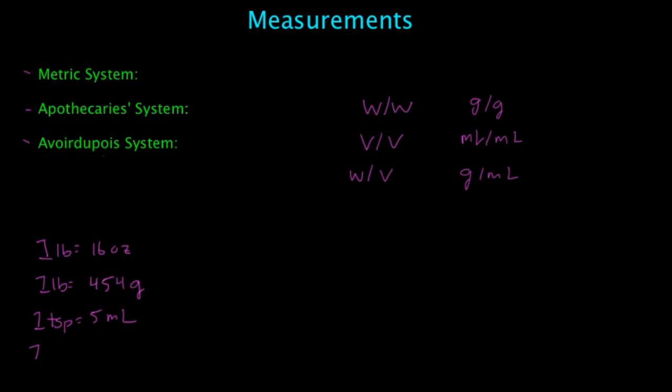You also want to know that one teaspoon is 5 milliliters, and one tablespoon is 15 milliliters. You'll also want to know that for every one kilogram there is 2.2 pounds.